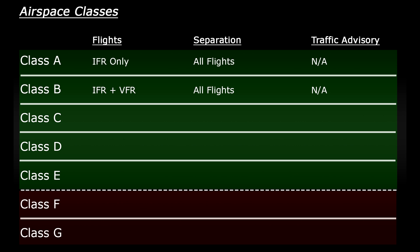In class C airspace things get a little more complicated. IFR and VFR flights are allowed. Air traffic control provide separation instructions to keep IFR flights away from other IFR flights and also VFR flights. They also provide VFR flights with separation instructions from IFR flights. However, they won't separate VFR flights from other VFR flights — instead they give VFR pilots a traffic information service, advising them of other VFR traffic.